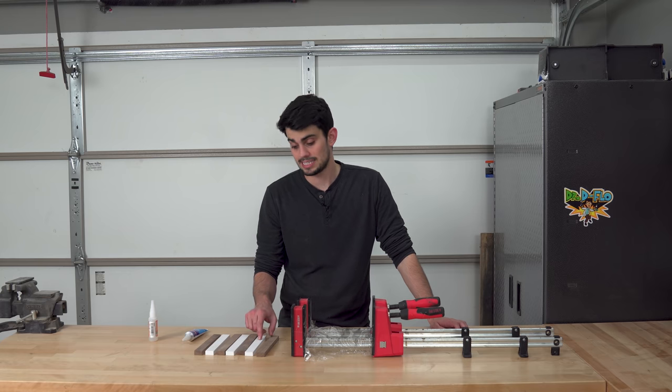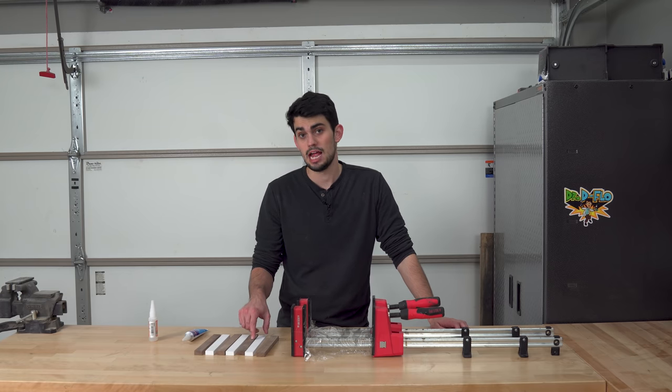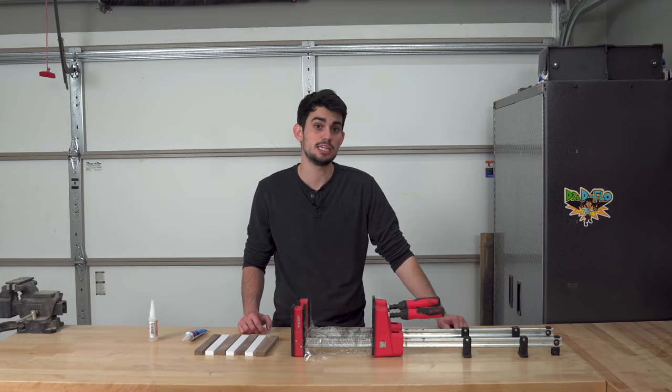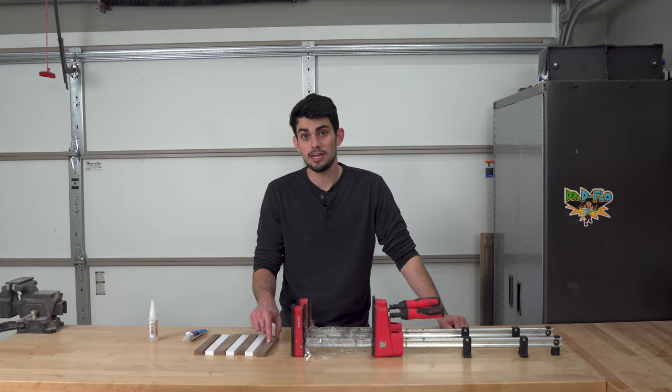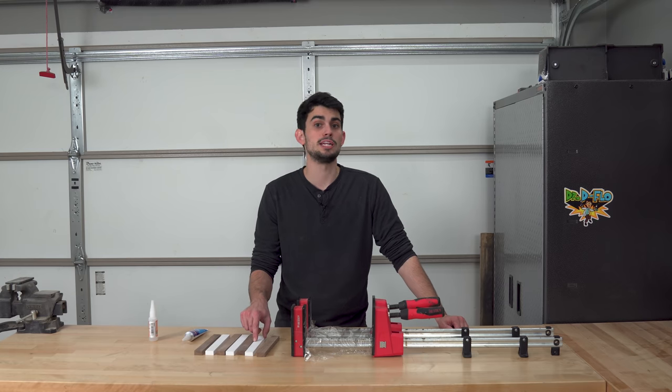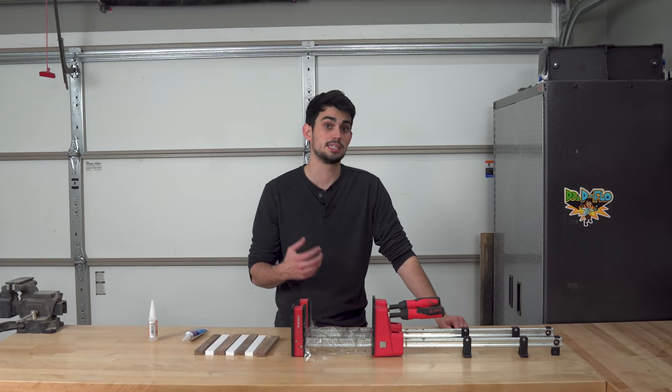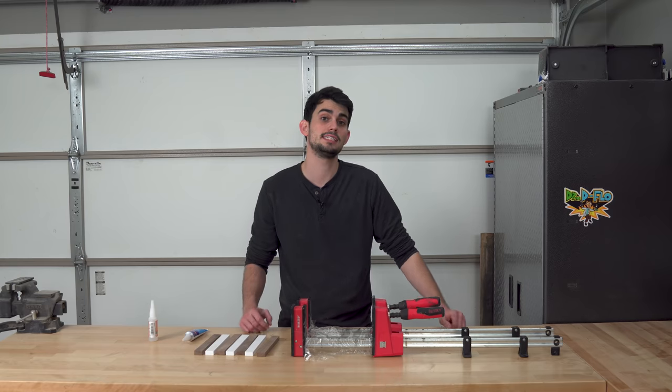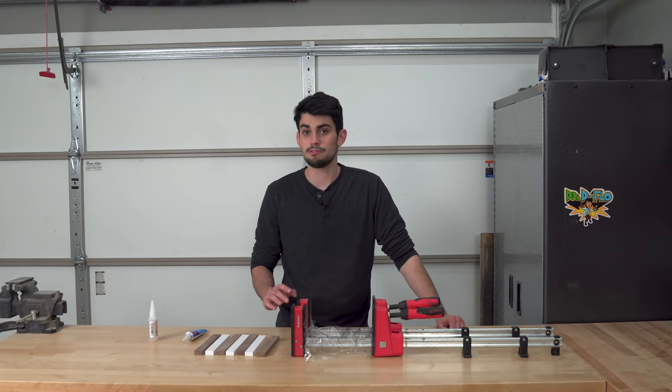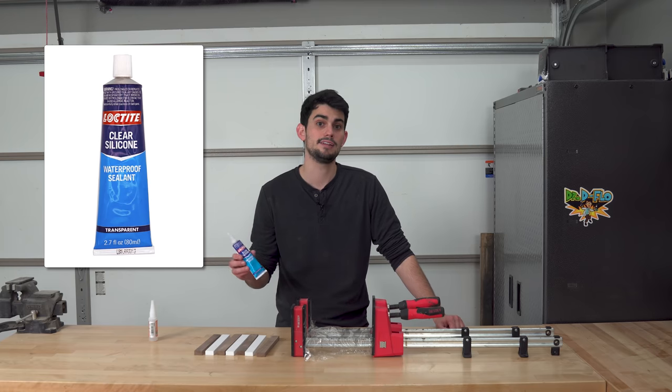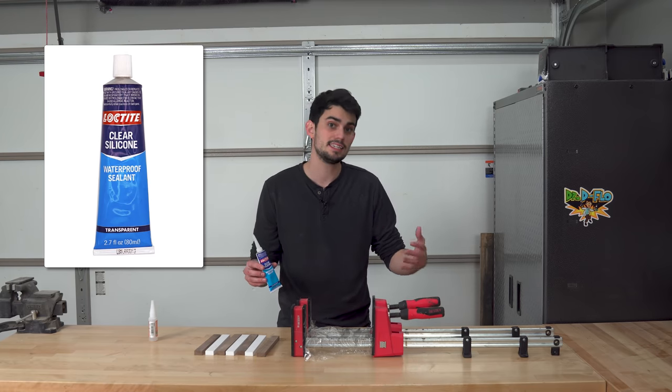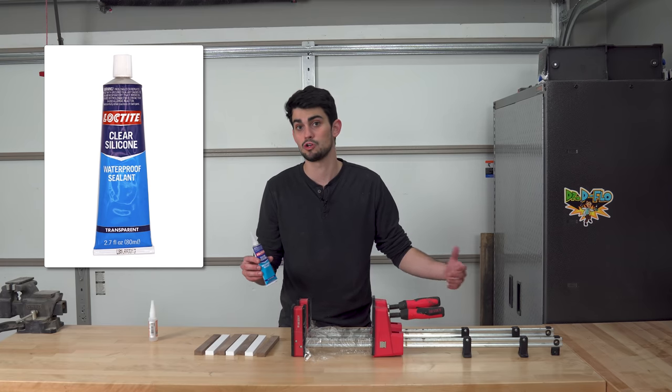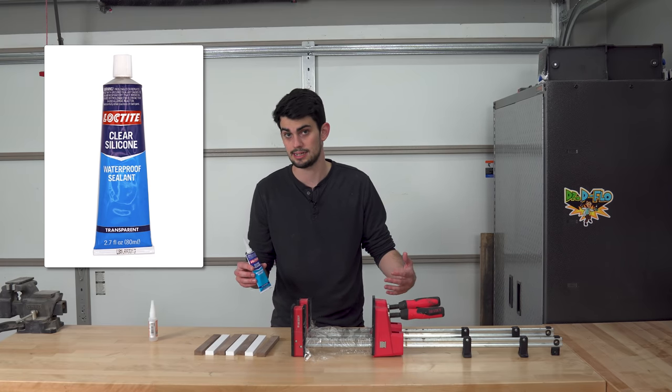Compared to plastics, woods are dimensionally unstable. They contract and expand with changing temperature and humidity. When you glue a strip of wood to plastic, that glue joint is going to be under a lot of stress because the plastic will resist the wood's tendency to change dimensions. For this reason, I have opted for a silicon based adhesive compared to say an epoxy. This adhesive has the elasticity to allow for the wood to grow or shrink without separating from the plastic.